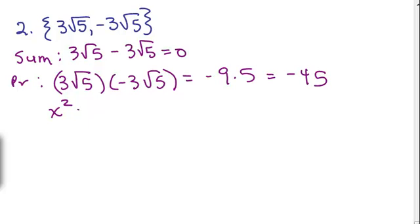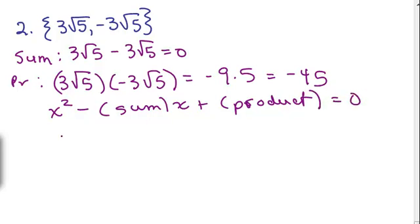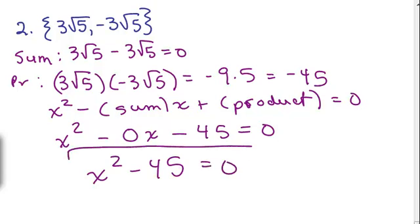The formula is x squared minus the sum times x plus the product, the sum of the solutions and the product of the solutions. So we're going to get x squared minus 0 times x plus the product. So plus negative 45 is just minus 45 equals 0. So we want to write that as x squared minus 45 equals 0. Again, you could check by plugging in 3 root 5, making sure that is equal to 0. And then also plug in negative 3 root 5. I just want to remind you I could have done this the same way as I did number 1. You didn't have to use the sum and product.